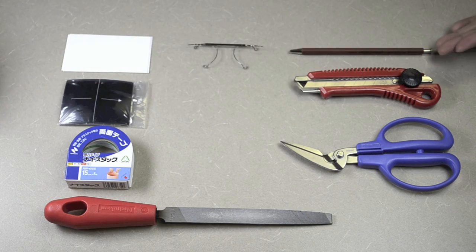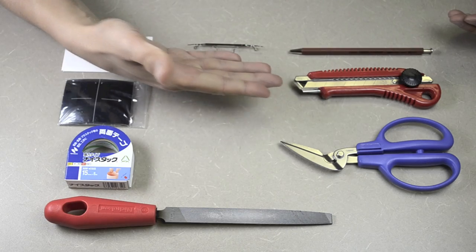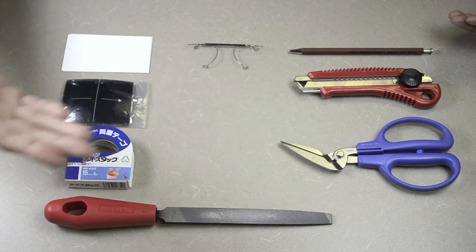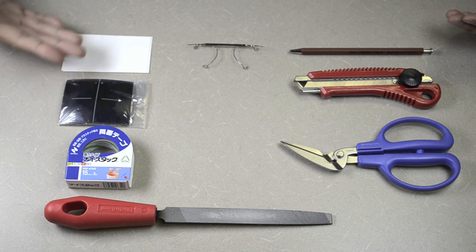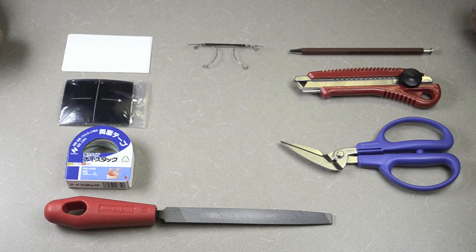You're going to need a pen, an X-Acto knife, a former blank cutter, a file, double-sided tape, the lenses, and also a paper card to do the tracing.